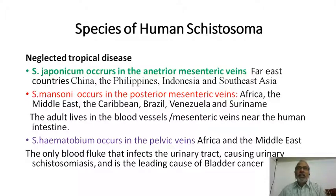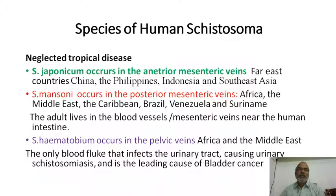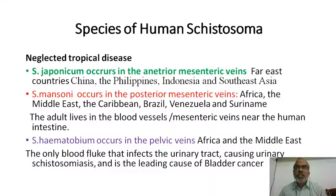Schistosoma has many species, of which three are very important: Schistosoma japonicum, Schistosoma mansoni, and Schistosoma haematobium — these are the human schistosomes having greater significance in medical biology. Schistosoma japonicum is a very intensive parasite spread to many parts of the world, especially Far East countries like China, Philippines, Indonesia, and Southeast Asia.